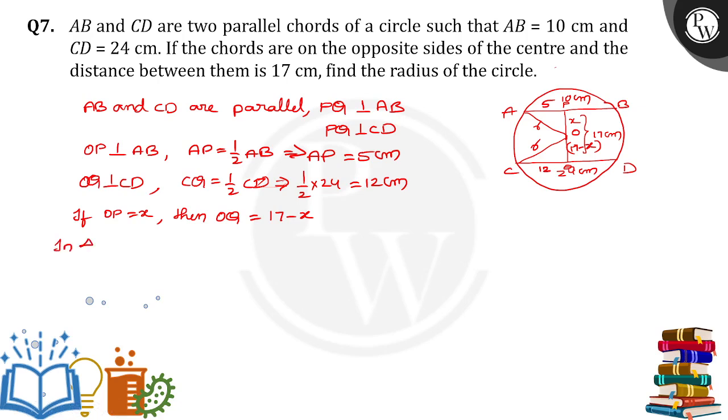In triangle AOP, we apply Pythagorean theorem. OA square is equal to OP square plus AP square. So OA square is equal to X square plus 5 square. Take it as equation number 1.